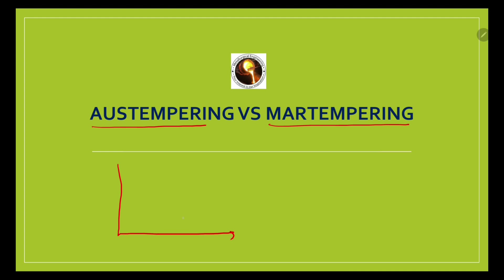In hardening heat treatment, as shown on this diagram with temperature on the y-axis and time on the x-axis, we heat the steel above a critical temperature, hold for some time, and then quench — performing rapid cooling.